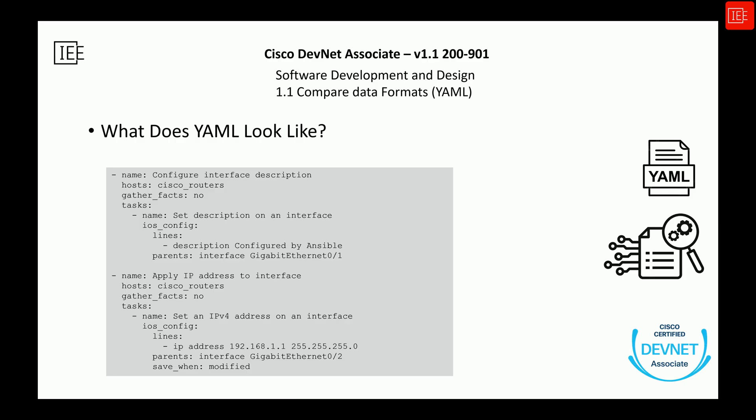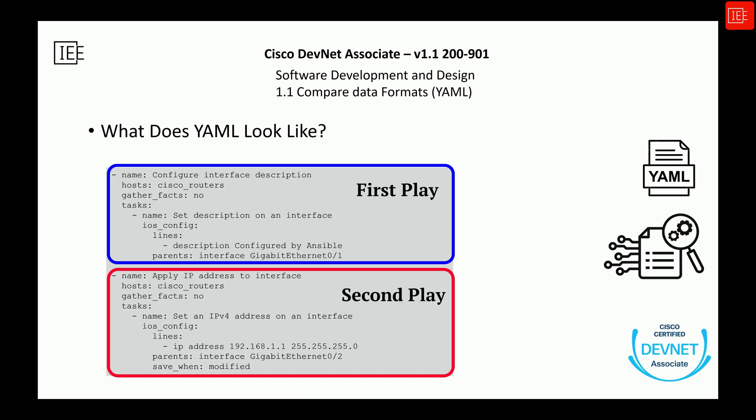The most important thing to know is that YAML is indentation-based, meaning the structure depends on how things are spaced. Typically we use two spaces to indent each level. The dash sign you see at the start of a line is used to represent a list item — kind of like in Python when you have a list of dictionaries. Whenever you see a colon, that usually introduces a key-value pair. Now let's go through the YAML example line by line. The dash means this is the first item in a list — in this case, a list of plays or tasks.